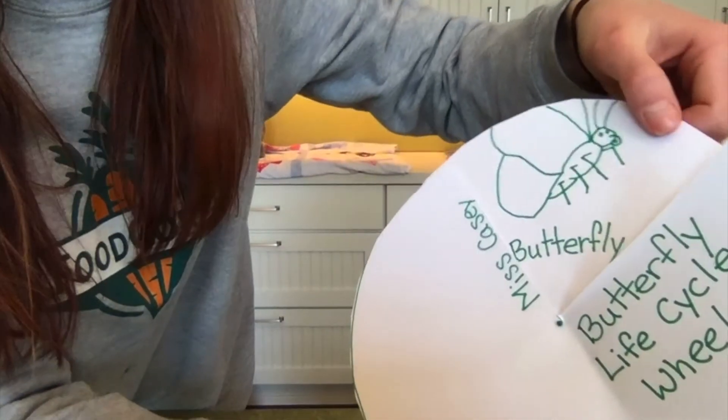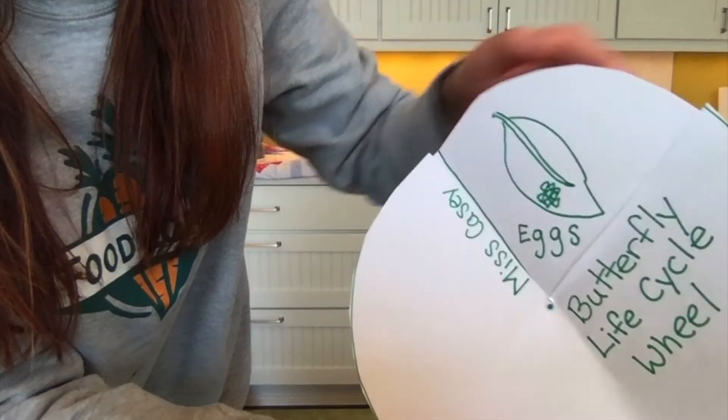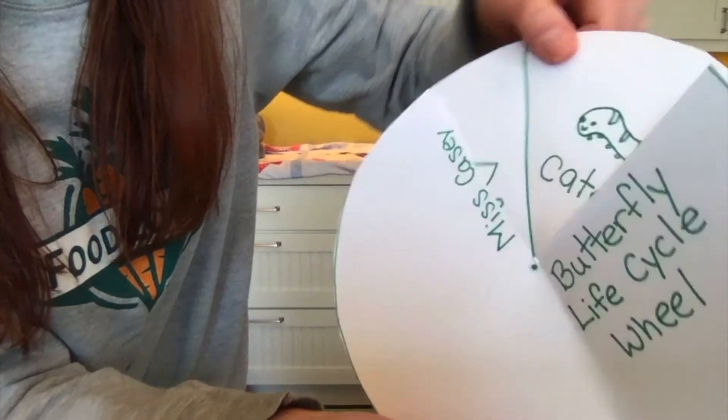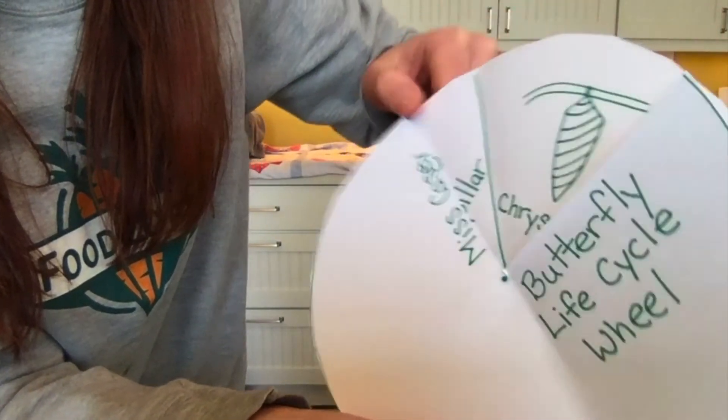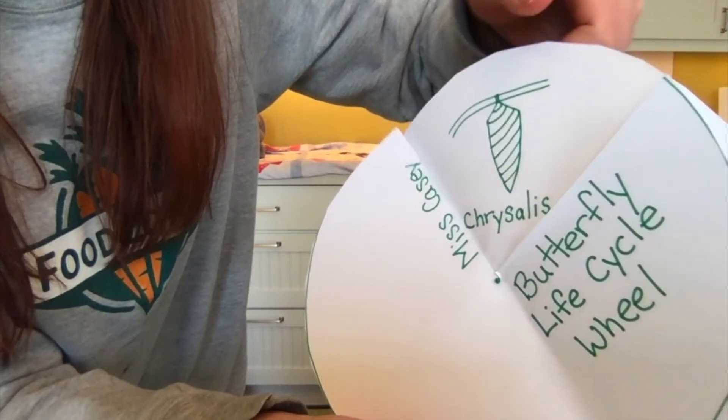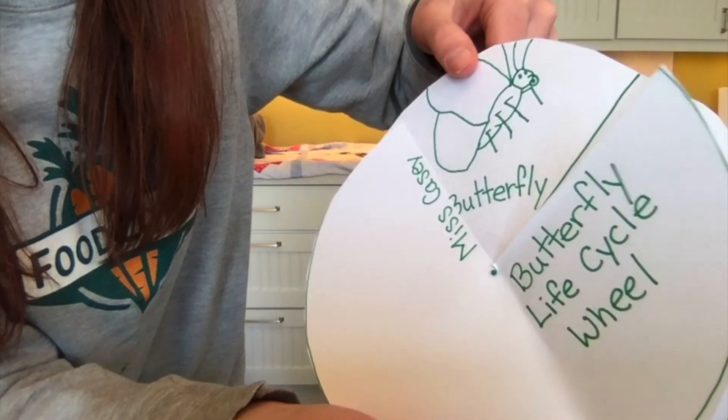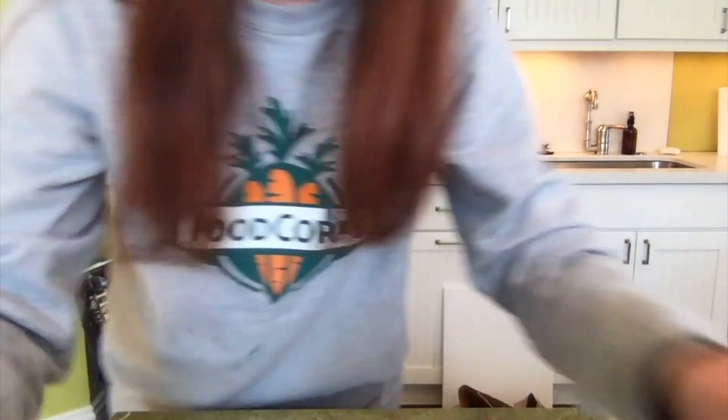I have my life cycle wheel. I can see how the butterfly lays the eggs, which turn into caterpillars, which turns into a chrysalis, which turns into a butterfly. Those will be beautiful to see in our gardens when spring comes.